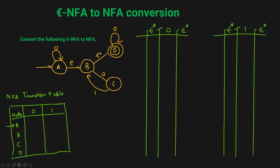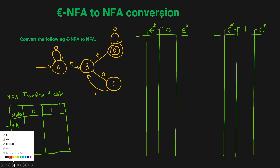Once you understand what ENFA is, then you will understand how to convert from ENFA to NFA. I already made a video on that with a first example, so you should watch that video after you understand what ENFA is, then you can come to this second example. Now, the first step is we start with the initial state, that is A, and we are going to find the Epsilon closure for state A.